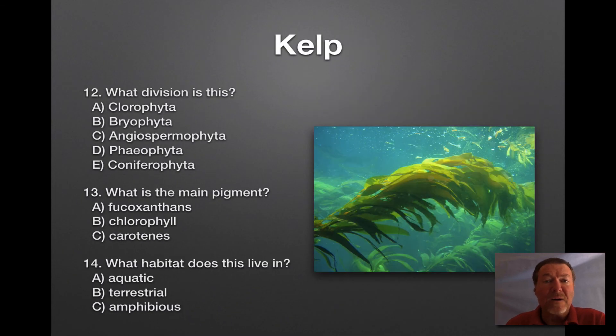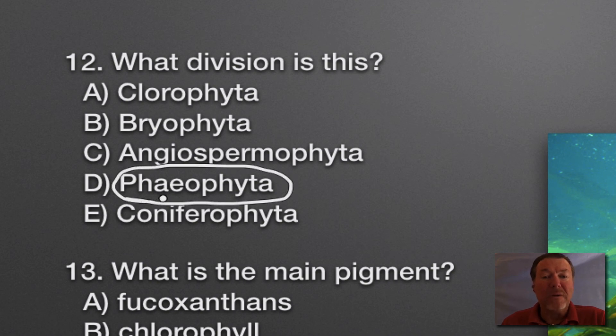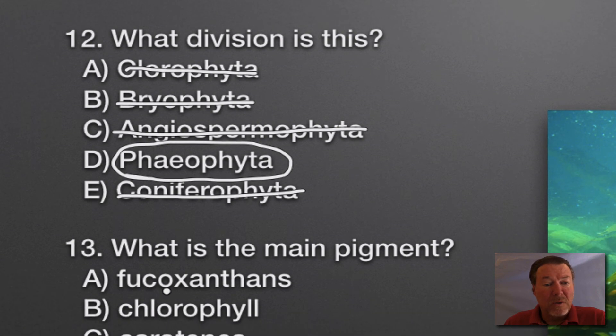Our final specimen is kelp. What division? It's Phaeophyta, brown algae. I realize the photo doesn't look brown, but remember, light waves are absorbed quickly in water. The only ones left are green and blue because red, oranges, and yellows are absorbed. So brown algae tends to look yellowish. It's not Chlorophyta - that's green algae. Bryophyta is mosses. Angiosperms are flowering plants like the dandelion. Conifers are pine trees.